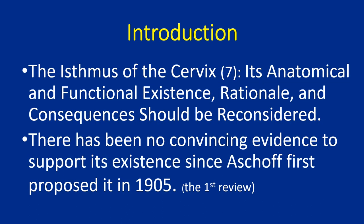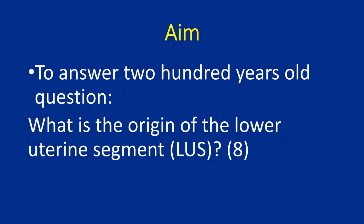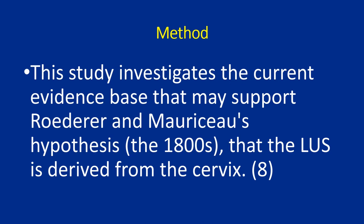The isthmus of the cervix — its anatomical and functional existence, rationale, and consequences — should be reconsidered. There has been no convincing evidence to support its existence since Ashoff first proposed it in 1905. To answer a 200-year-old question — what is the origin of the lower uterine segment (LUS)? — this study investigates the current evidence base that may support Roterer and Morisot's hypothesis from the 1800s, that the LUS is derived from the cervix.